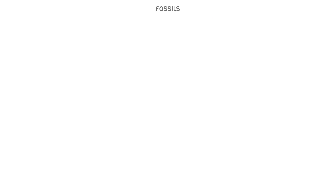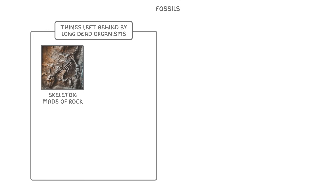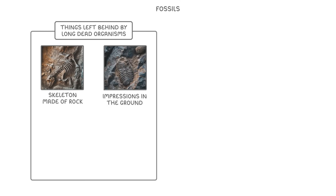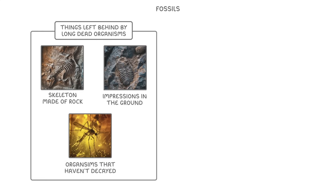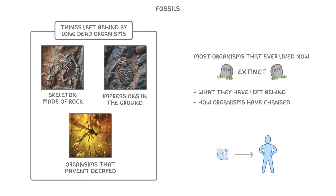In this video we're going to take a look at fossils, which are basically things that have been left behind by long dead organisms — so it could be a skeleton made of rock, impressions in the ground, or entire organisms that haven't decayed yet. The reason studying fossils is so important is that most of the organisms that have ever lived are now extinct, so the only way we can learn about them is by looking at what they've left behind. By studying these fossils we can see how organisms have changed throughout the past, which provides evidence for evolution, as we're able to see the small incremental changes that took place over millions of years.